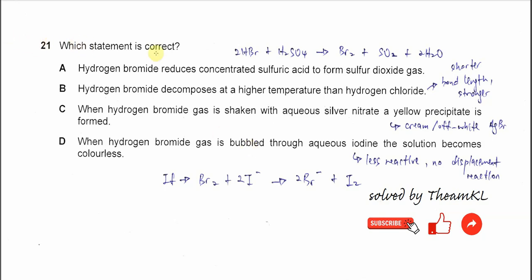Question 21: Which statement is correct? A: Hydrogen bromide reduces concentrated sulfuric acid to form sulfur dioxide gas. We know that HBr, the bond easily breaks and it can react with H2SO4. The bromide will oxidize from negative 1 to 0. At the same time, the sulfur in the H2SO4 will get reduced from positive 6 to positive 4.